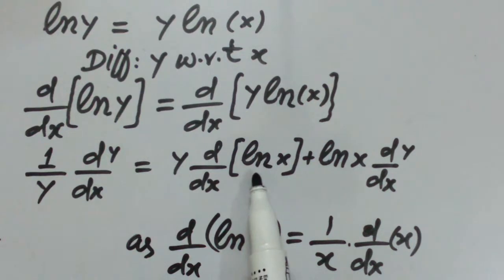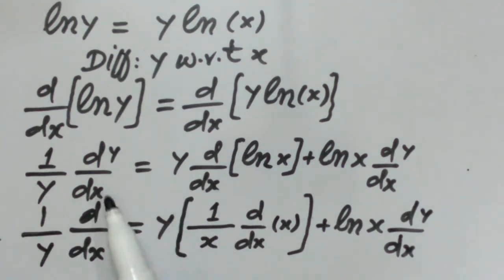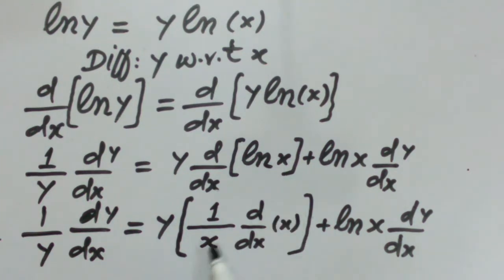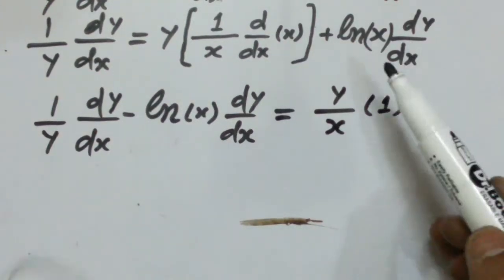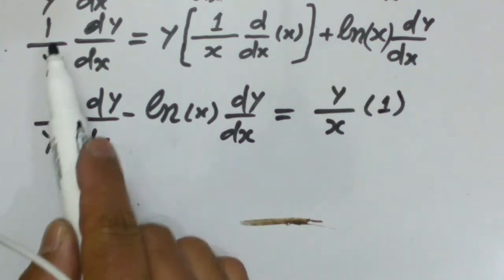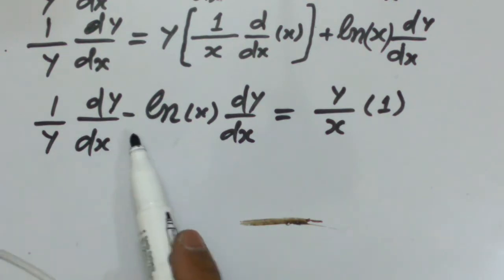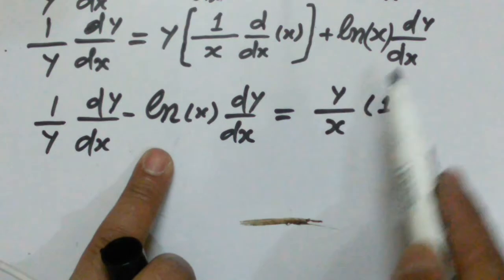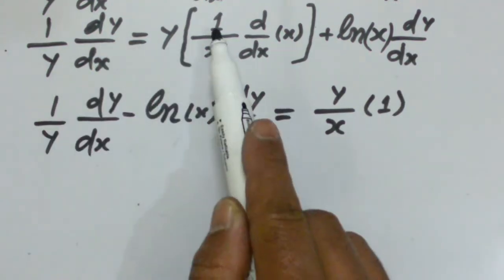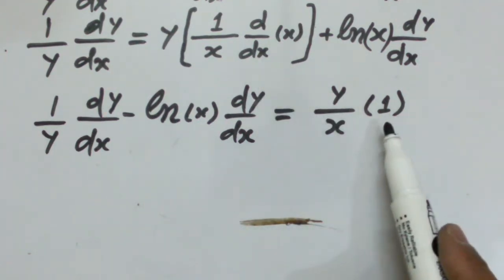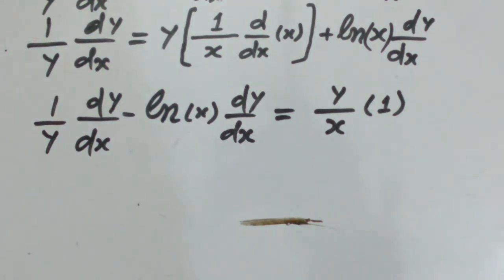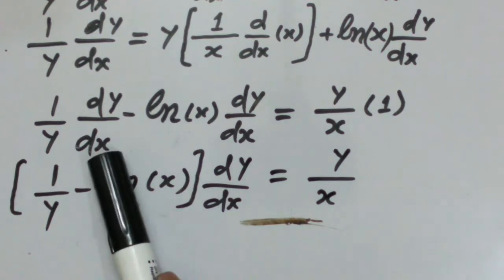So (1/y)·(dy/dx) equals: the first function times the derivative of the second, plus the second function times the derivative of the first. That gives: y · (1/x) · (dx/dx) + ln(x) · (dy/dx). We rearrange: (1/y)·(dy/dx) minus ln(x)·(dy/dx) is equal to y/x.